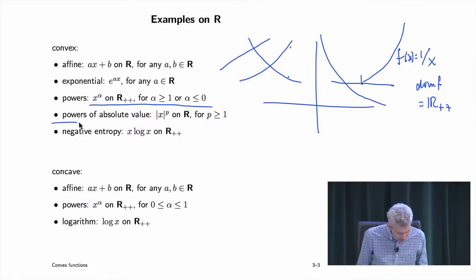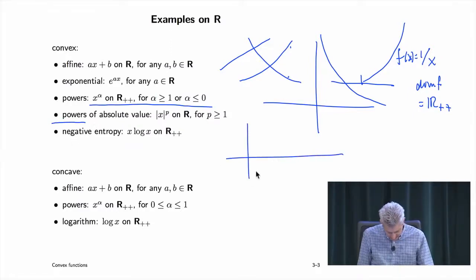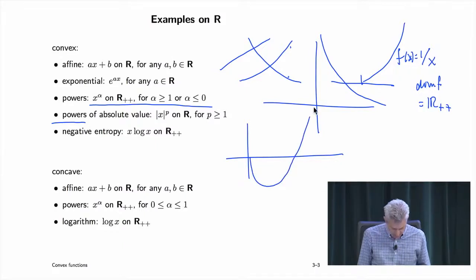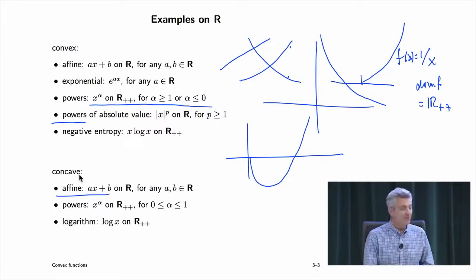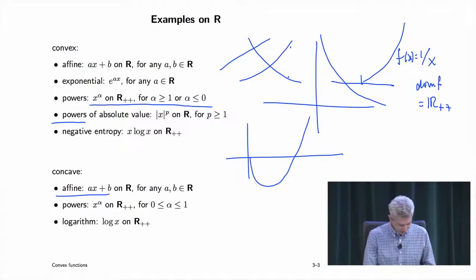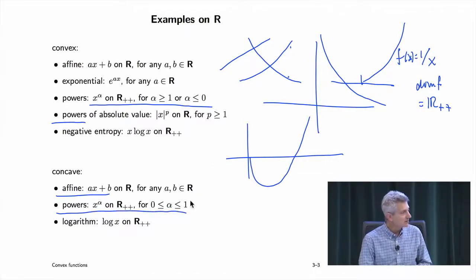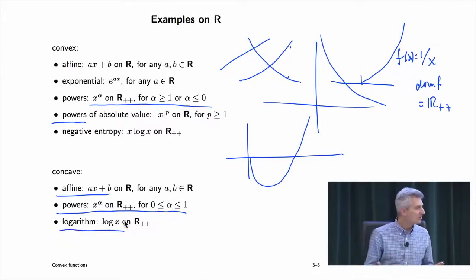Powers of absolute value are obvious. Negative entropy looks like a sharp curve going up — it's convex. Concave examples include affine (which is both convex and concave), powers between 0 and 1 like square root, and the logarithm — these are very obvious concave functions.